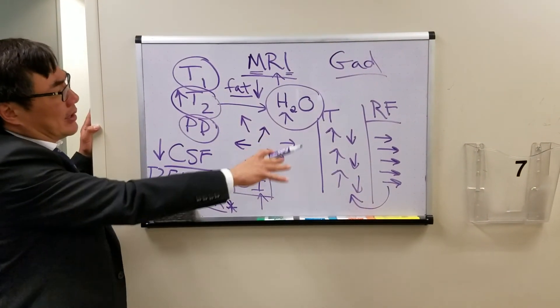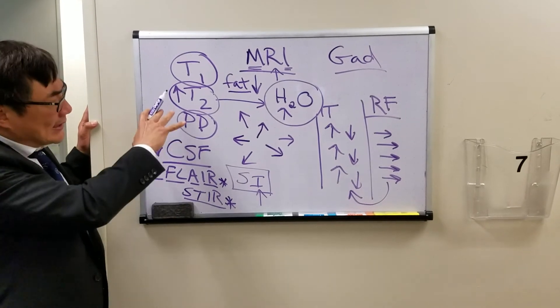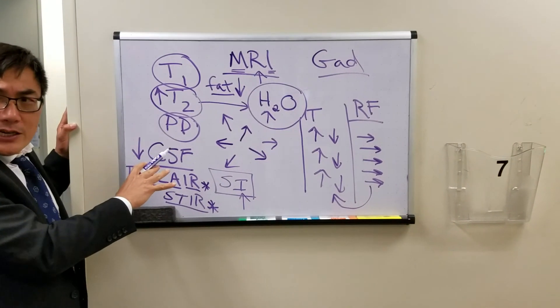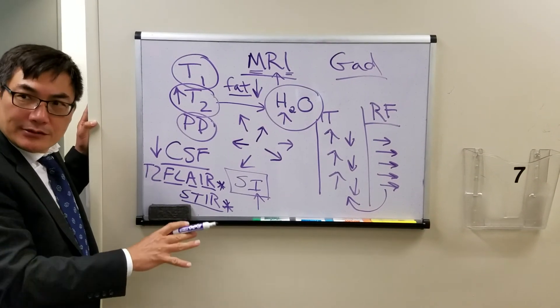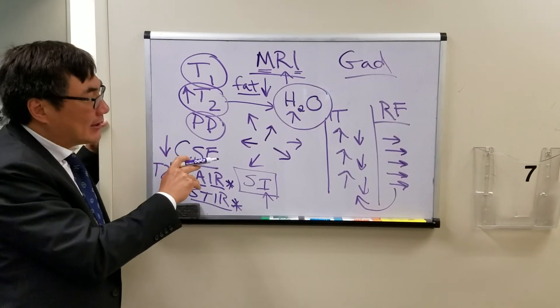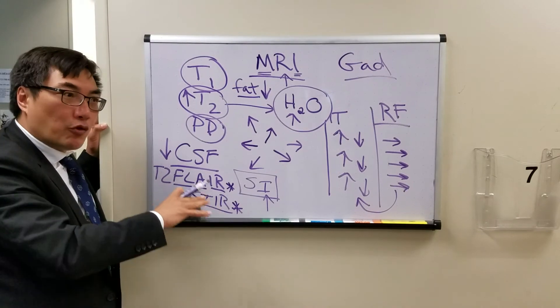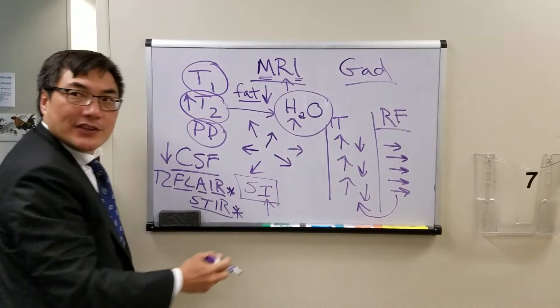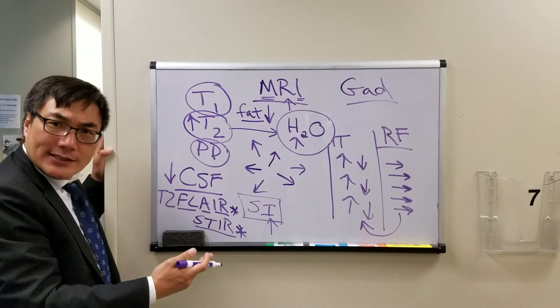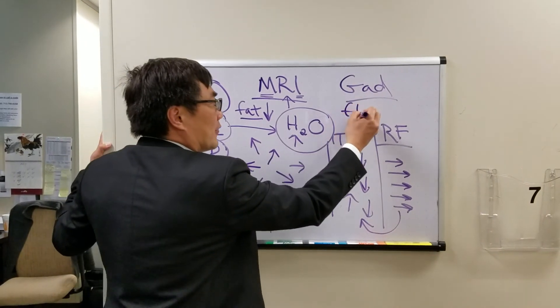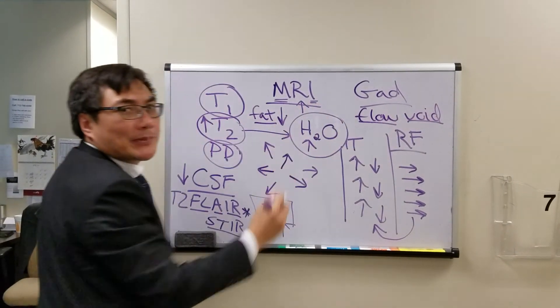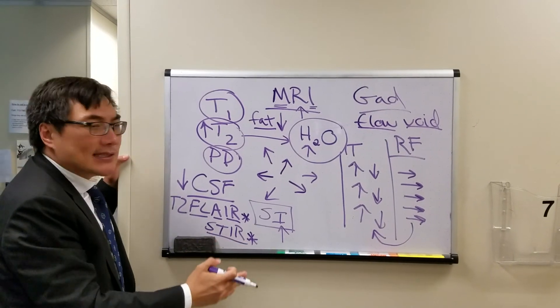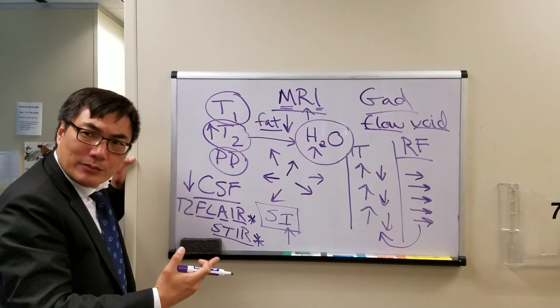So now that you know how the protons work and how the signal intensity of MR works in the giant magnet, you should know that fast-moving blood produces no signal. So if the proton is moving too quickly, it won't get a chance to align in the magnetic field. And that will create a void in the signal, which we call a flow void.